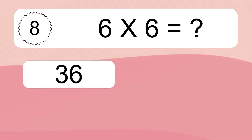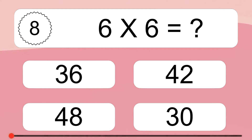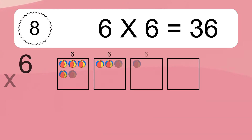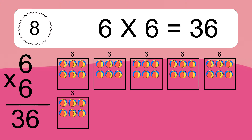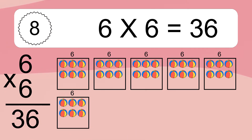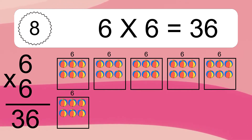6 times 6 equals what? 6 times 6 equals 36. We have 6 boxes, and each box has 6 colorful balls inside. If you count all the balls in all the boxes together, you will have 6 times 6 balls. This equals 36 balls.